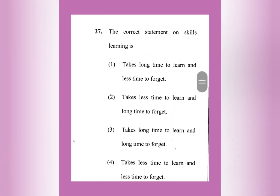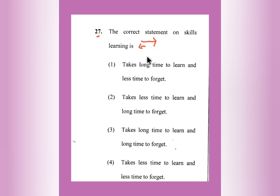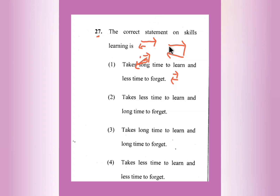Moving to question number 27: The correct statement on skill learning is — does it take long time to learn and less time to forget, or takes less time to learn and less time to forget, or takes long time to learn and long time to forget? Option number 3 — it takes long time to learn and long time to forget — is the right answer. That is the correct statement of skill learning. Even though it takes longer time to learn, it also takes long time to forget.